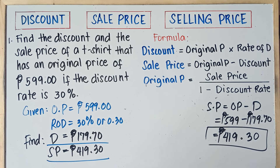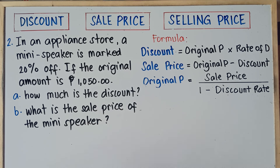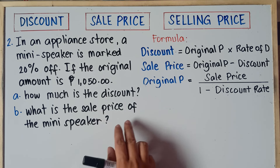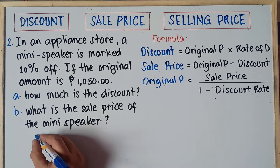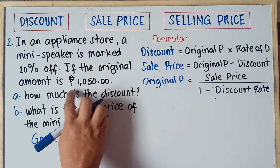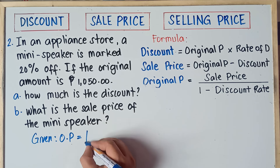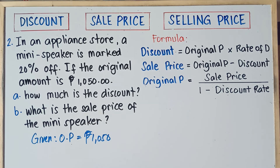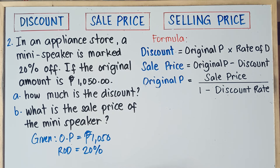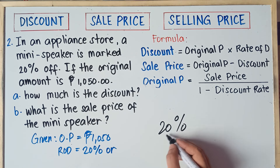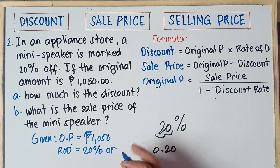Let's work on example number 2. In an appliance store, a mini speaker is marked 20% off. If the original amount is 1,050 pesos, letter A: how much is the discount? Letter B: what is the sale price of the mini speaker? First, write down the given: Original Price = 1,050 pesos. Rate of Discount = 20%, which converts to 0.20 in decimal.